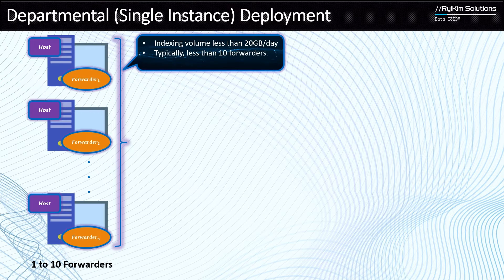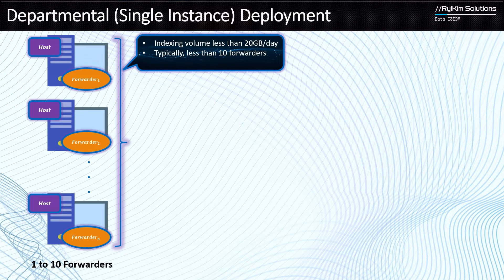The second characteristic is the number of forwarders. It's departmental, so maybe it's a very small setting where you have just like 10 machines that you want to collect data from and send it to Splunk. You're going to install 10 forwarders — one forwarder per machine — and configure them to collect data and send it to Splunk. You can have more than 10 forwarders, but it's recommended to keep it under 100 forwarders.